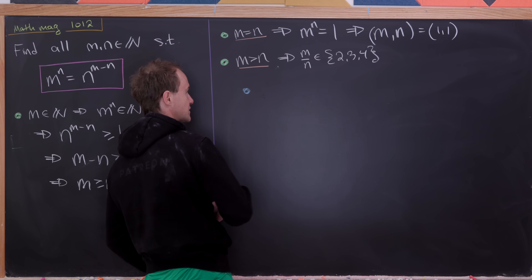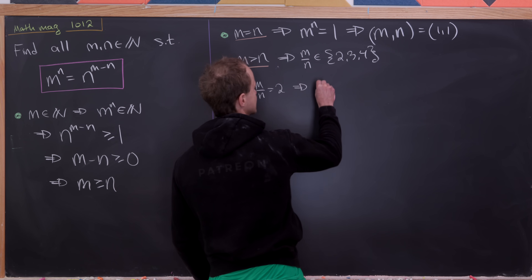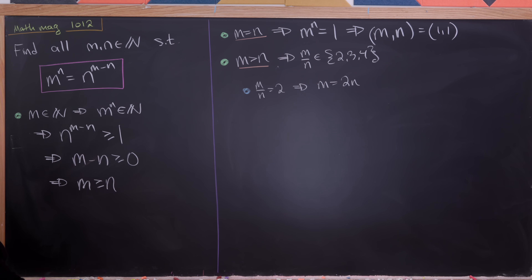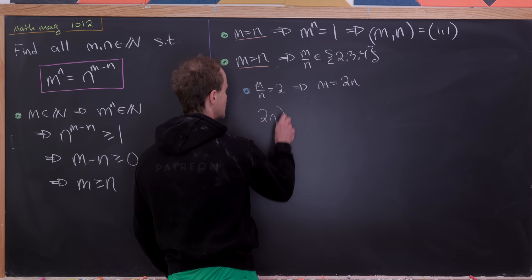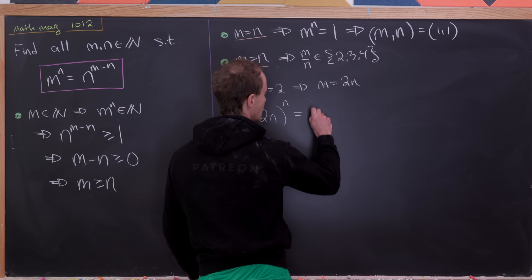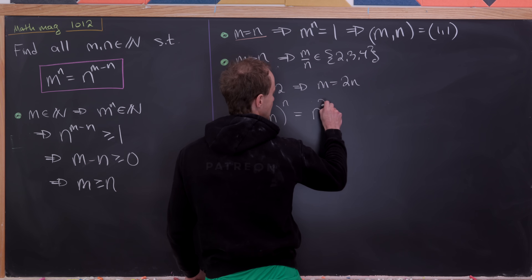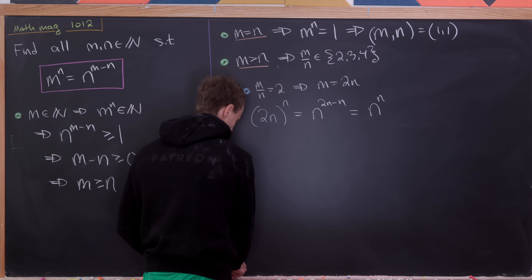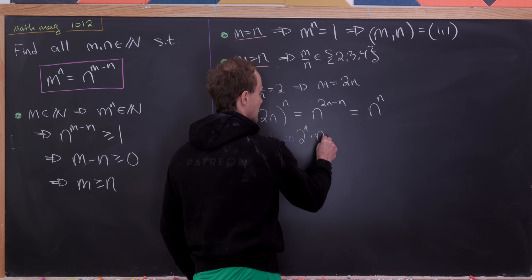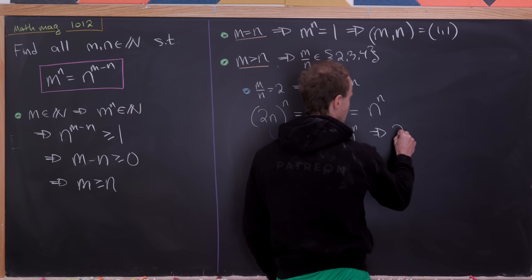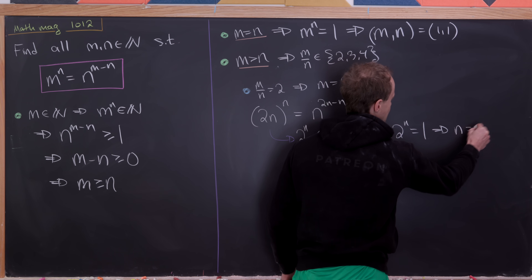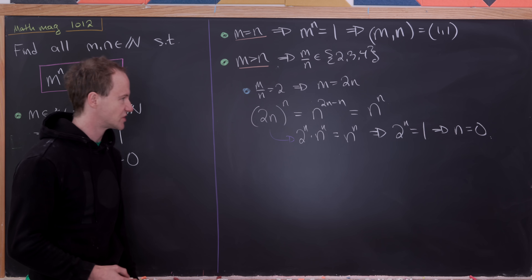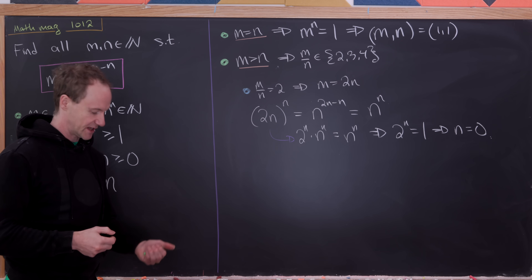First, let's check m over n equals 2, which means m equals 2n. Plugging into the original equation gives 2n to the nth power equals n to the nth power, which expands to 2^n times n^n equals n^n. That means 2^n equals 1, so n equals 0. But we're working in the positive integers, so this is not a valid solution.